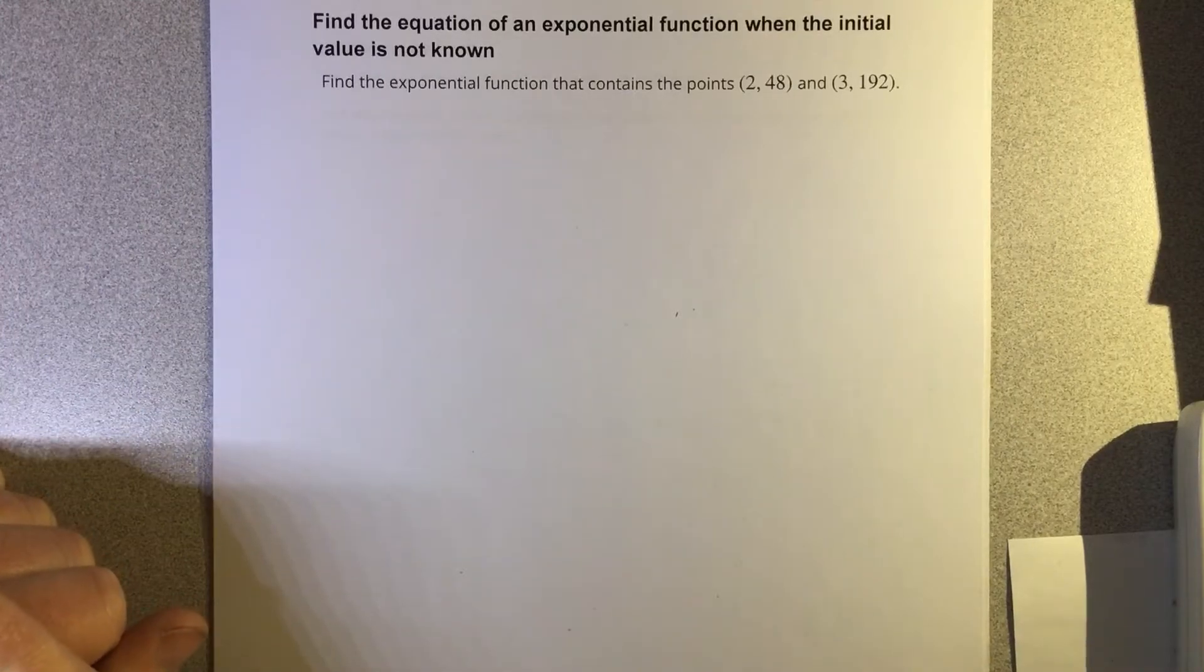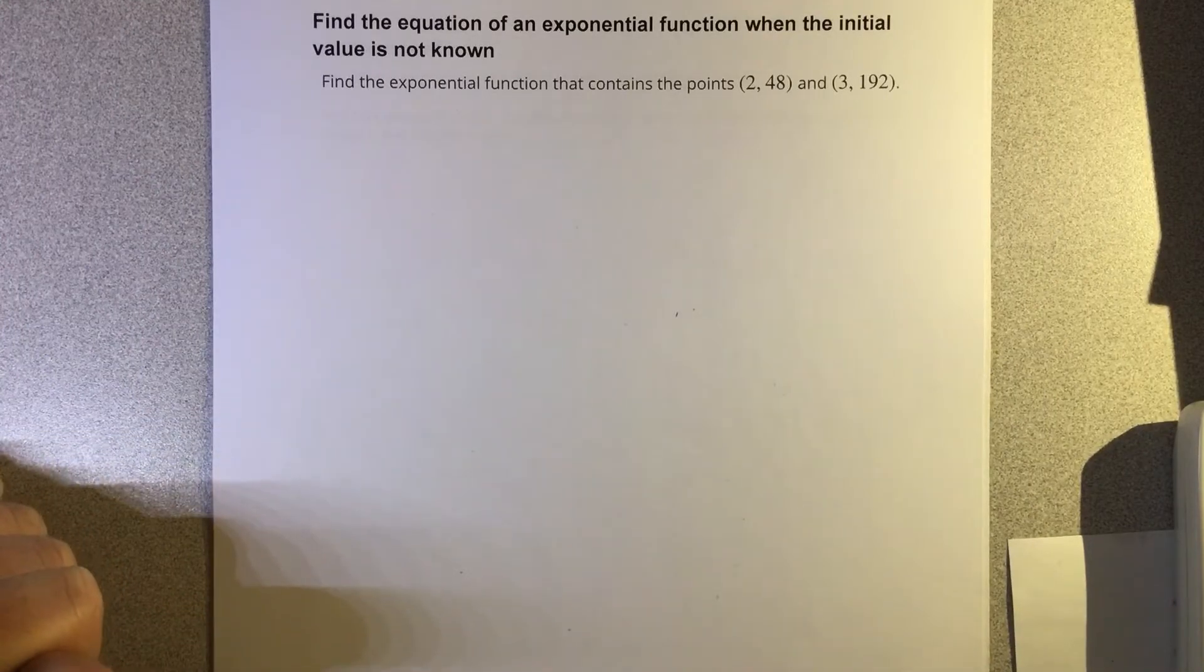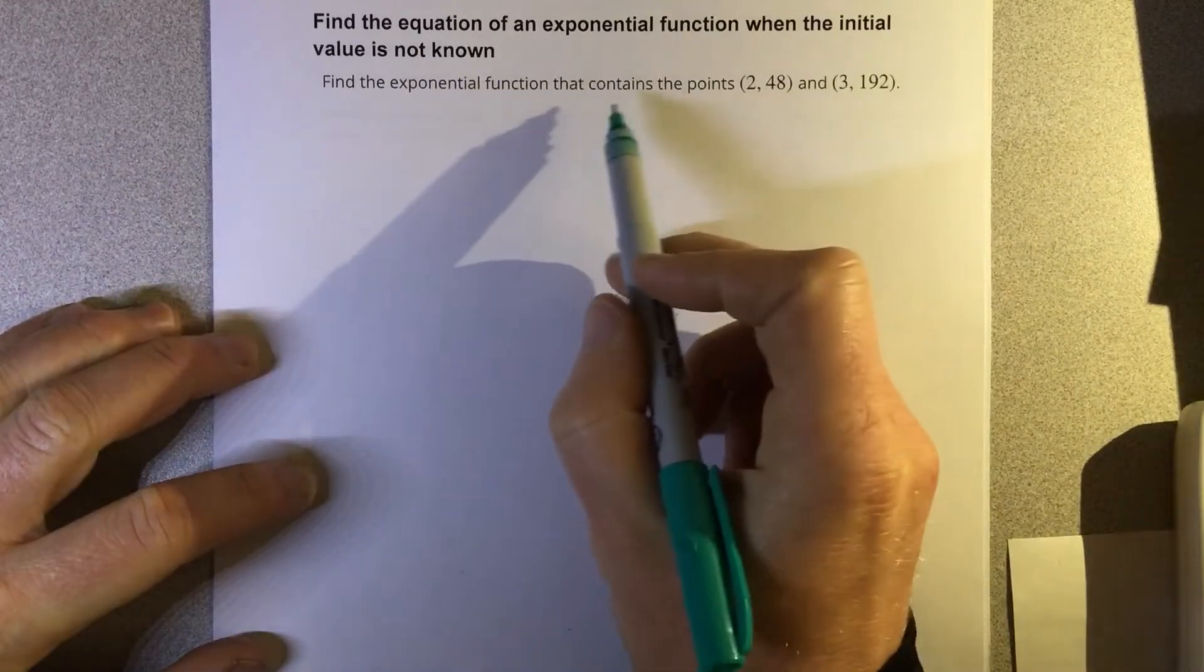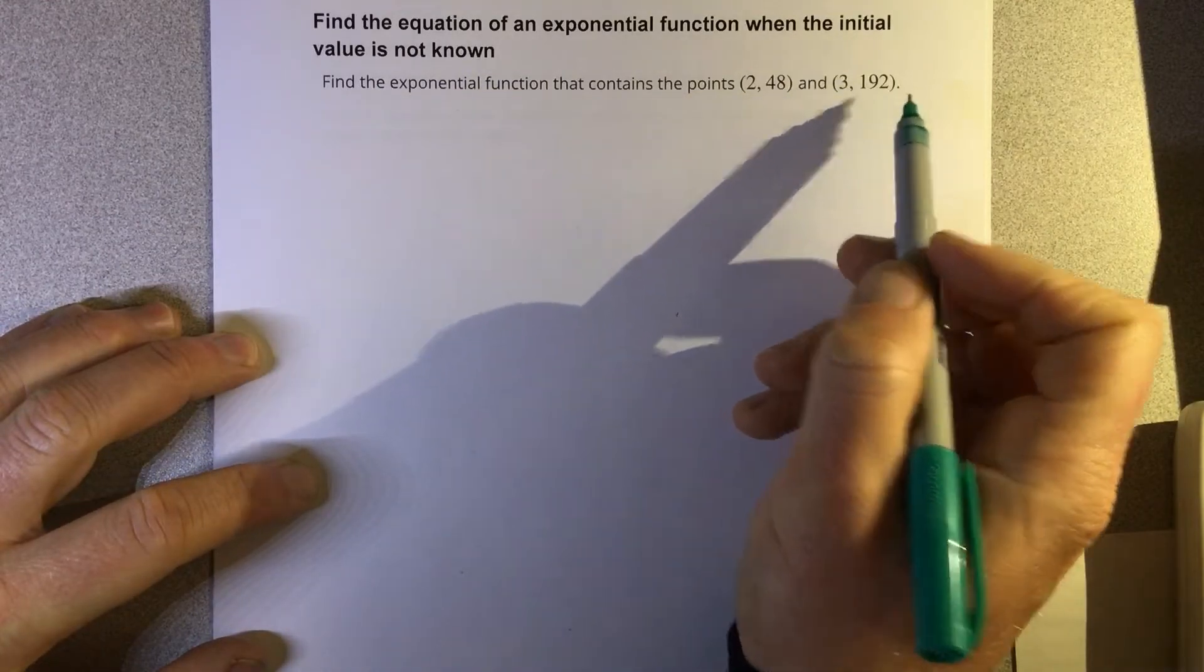In this video, we're going to find the equation of an exponential function when the initial value is not known. Find the exponential function that contains the points (2, 48) and (3, 192).